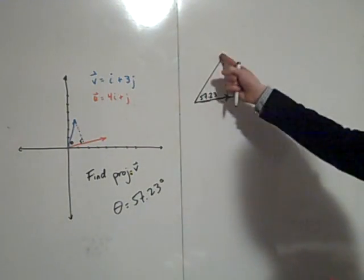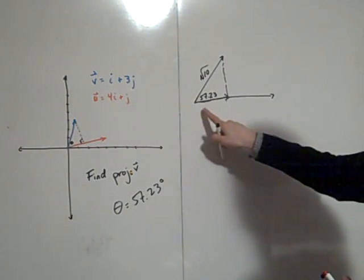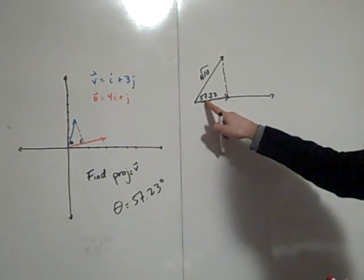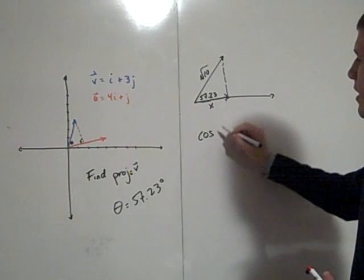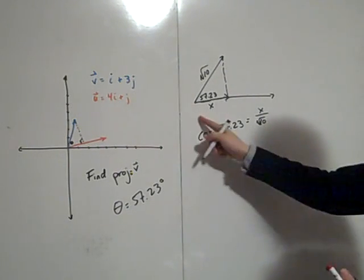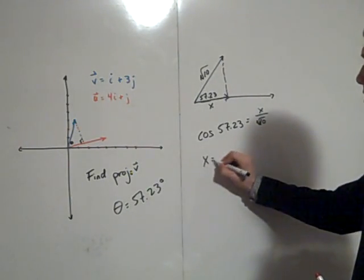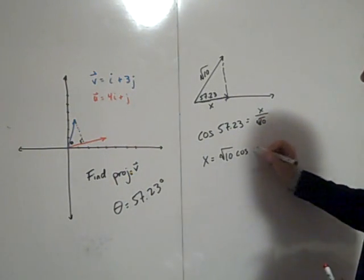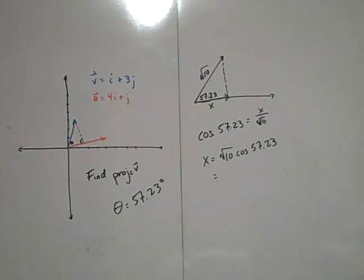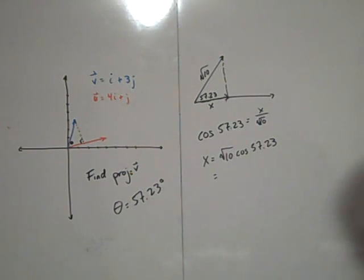The magnitude of vector v is root 10. So cosine of 57.23 equals x over root 10, which means x equals root 10 times cosine of 57.23. That gives us x approximately equal to 1.712.